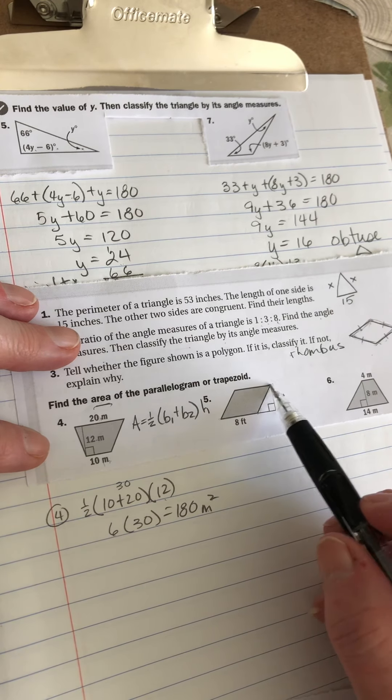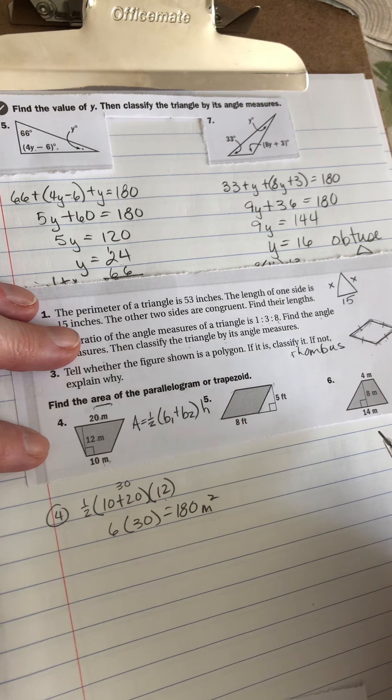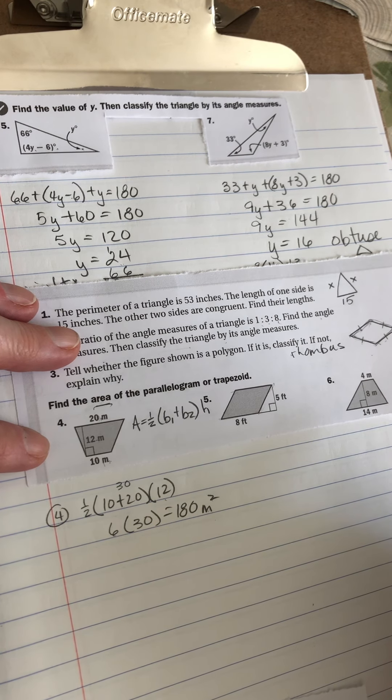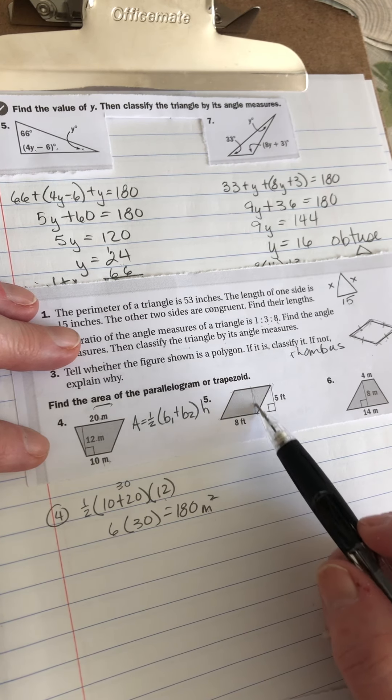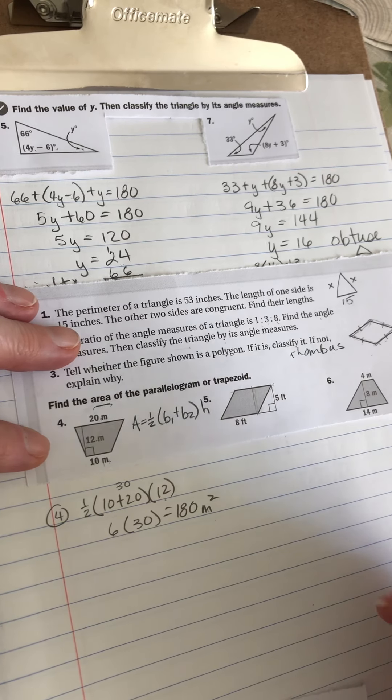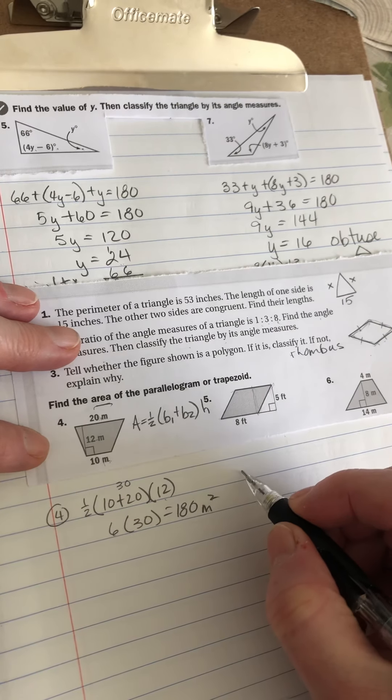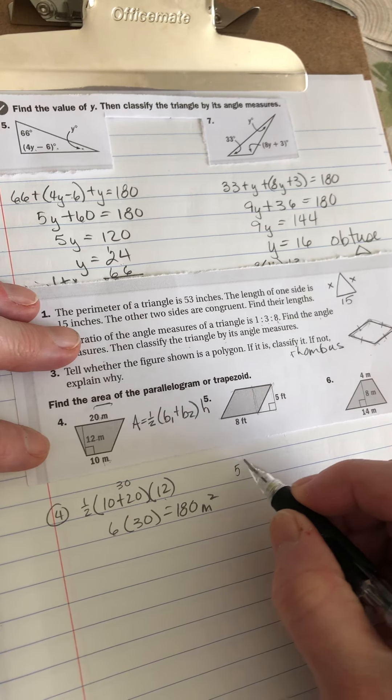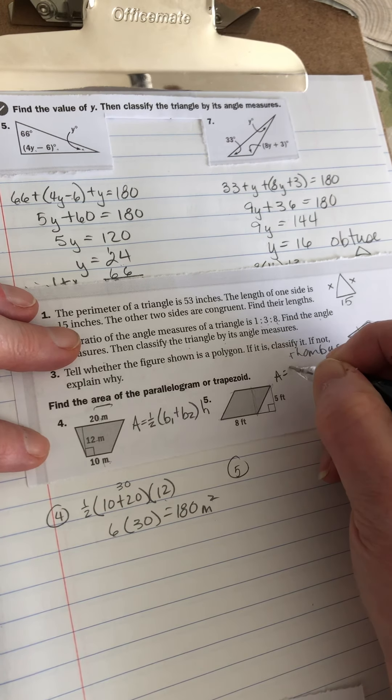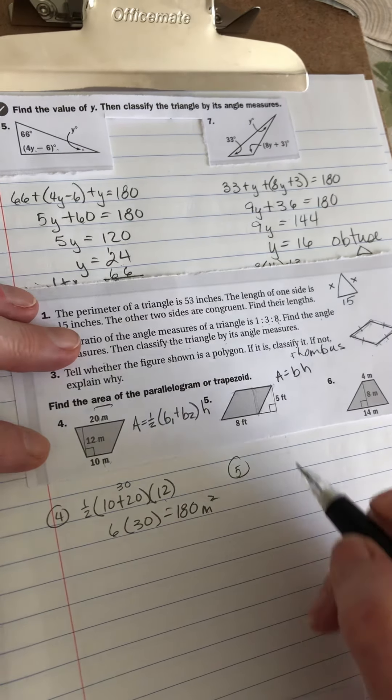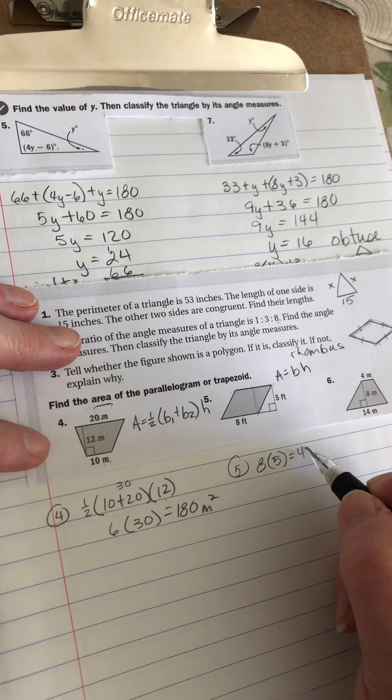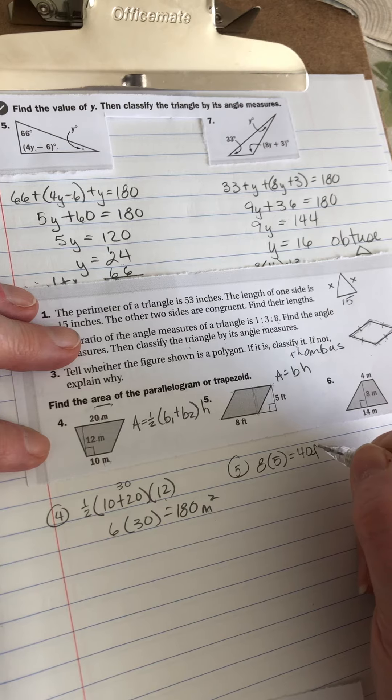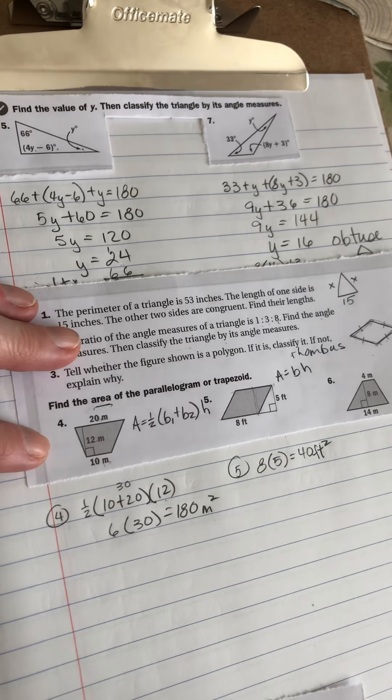This one is a parallelogram. Because they don't tell me two bases. The height, they didn't put it inside, but it would be the same. The height is five feet. So because it's a parallelogram, I'm just going to do base times height. Eight times five equals 40. And again, it's got to be square units.